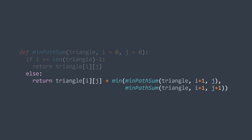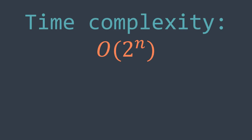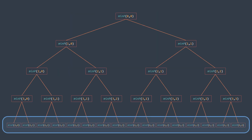For the time complexity, in the recursive case we always call the function twice and always move to the next row. Because we have n rows, we get 2 times 2 times 2... n times, which is 2^n — so the time complexity is O(2^n). For the space complexity, the function doesn't use extra space, but it's a non-tail recursive function so we consider the call stack. The call stack holds one call per row, and we have n rows, so the maximum call stack size is n — giving us O(n) space complexity.